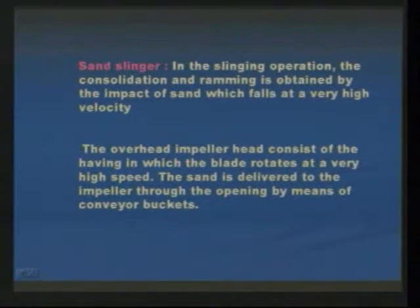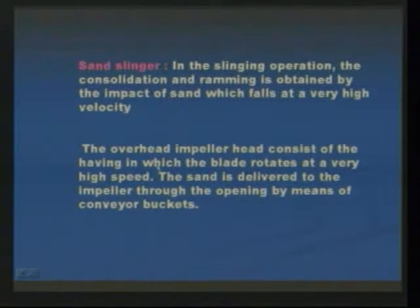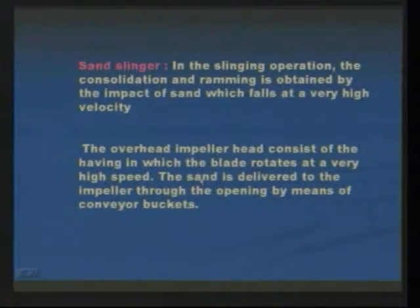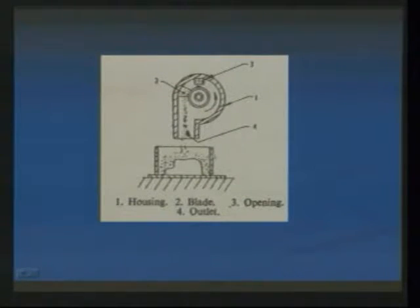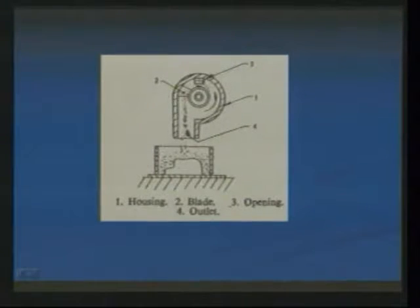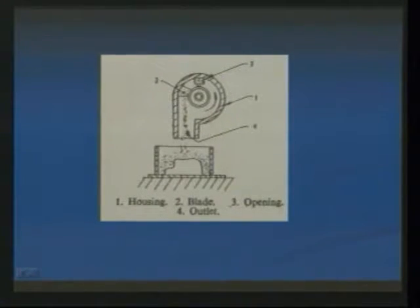Next one is sand slinger. In the slinging operation, the consolidation and ramming is obtained by the impact of sand which falls at very high velocity. The overhead impeller head consists of a housing in which the blade rotates at very high speed. Sand is delivered to the impeller through the opening by means of conveyor buckets. Initially, sand enters the casing through the opening and is projected over the blade surface. The blade rotates at high speed, the sand drops over the surface of the core placed at the bottom, and the mold cavity is developed.